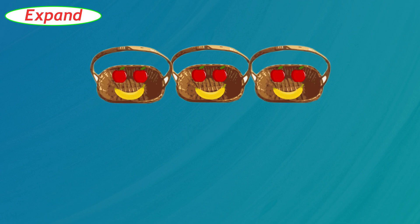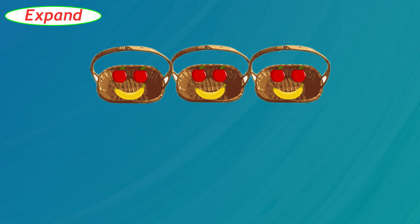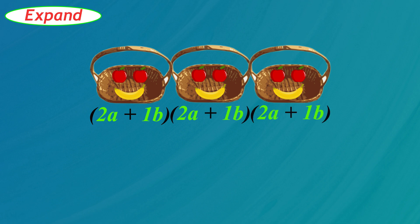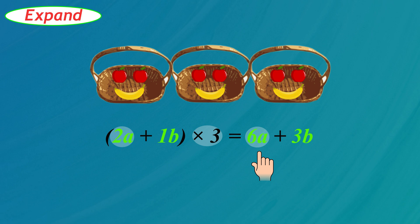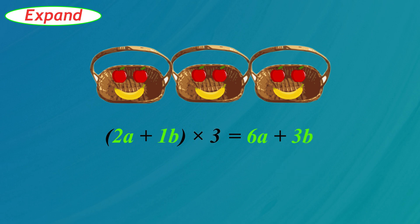What happens when there are three of these baskets? Altogether that's six apples and three bananas. We use parentheses: one basket has two apples and one banana, so we write parentheses around these. There are three baskets so we multiply that by three. Instead of counting, we can multiply each thing inside the parentheses by the three outside. So 2A multiplied by three is 6A, and 1B multiplied by three is 3B. We just used the distributive law to expand the expression in parentheses. That was easy, wasn't it?